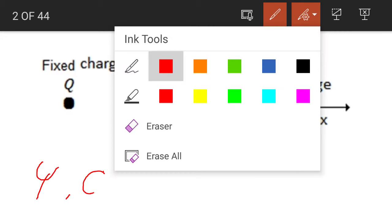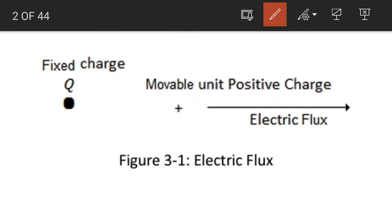We consider a charge of Q coulomb, which is fixed in position — it cannot move from one place to another. There will be an electric field in the vicinity of this charge. We place another movable unit positive charge nearby, and there will be a force of repulsion on it, causing it to move along a line. This path followed by a unit positive charge in an electric field is known as electric flux.